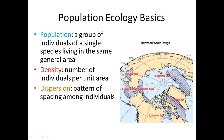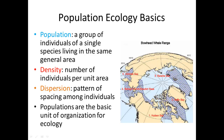Density is the number of individuals per unit area, and dispersion is looking at the spacing between them. Populations are the basic unit of organization for ecology, which looks at the larger scale of things.